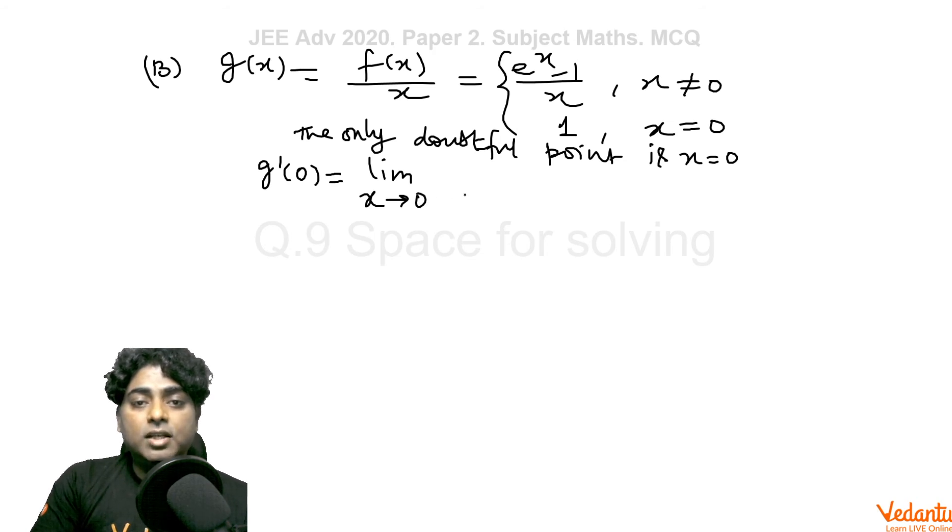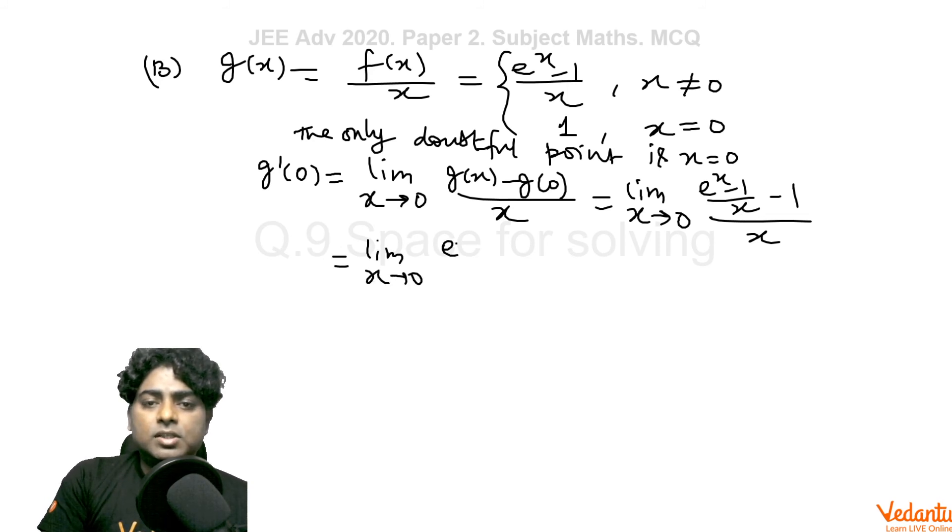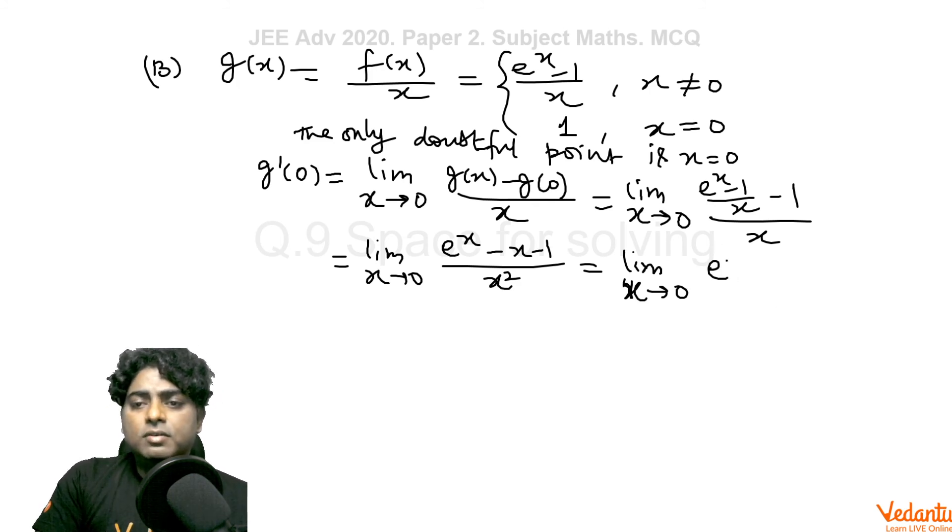The formula for g'(0) is limit of (g(x) - g(0))/x when x tends to 0. And as g(x) is (e^x - 1)/x whenever x is not 0, and g(0) is 1, so I am subtracting 1 and dividing by x and finding this limit which is an easy limit to solve. Here we can go for expansion of e^x or for L'Hopital's rule. I am going for L'Hopital here...